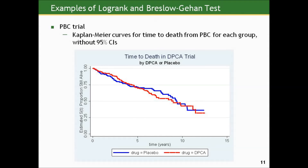Here are the curves without the 95% confidence intervals. You can see now that they sort of interweave — it looks like the drug group is doing slightly better. Remember, the event is death, so we're tracking the proportion who are still alive, meaning being higher is better. Still, they interweave and go back and forth, with no clear visual evidence of one group being dominant over the other.